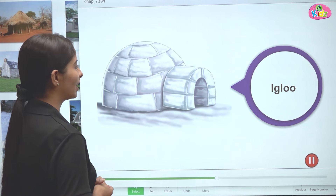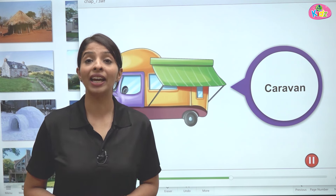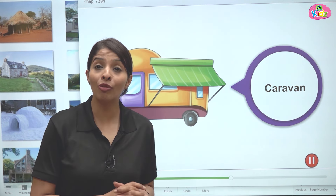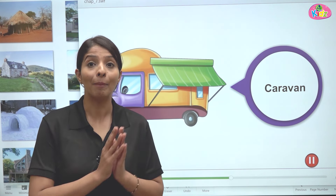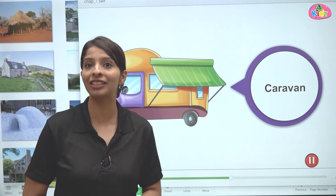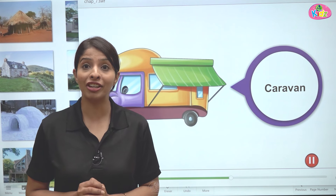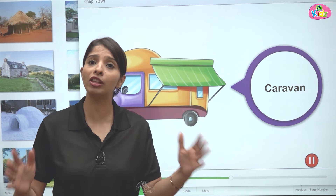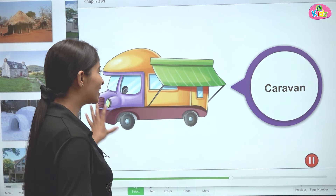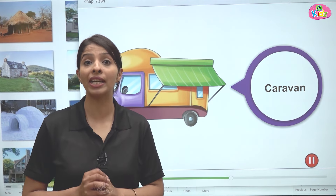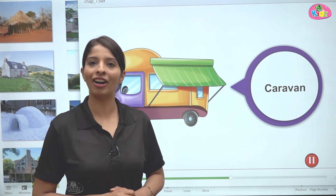The next type of house is the caravan. These are types of houses that move from one place to another. In ancient times, pilgrims and traders used to travel in caravans because they needed to stay safe and have all facilities. It has all the facilities that a home has, but it looks like a truck. In ancient times, camels and different animals would also pull them.